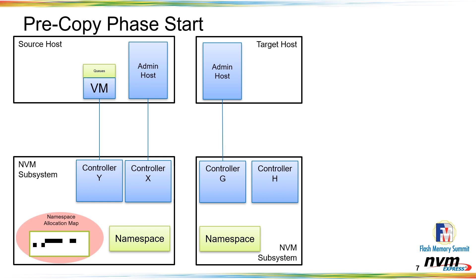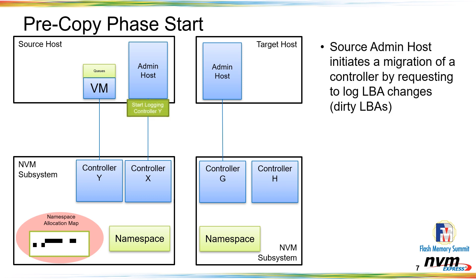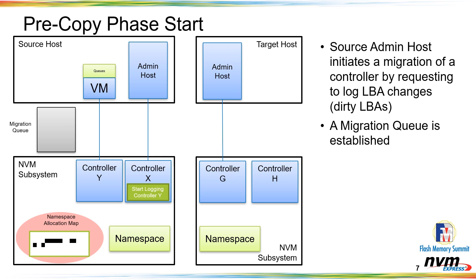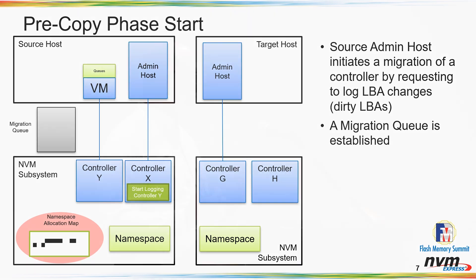The first thing we do is start the whole sequence by issuing a 'start live migration' command. As soon as we start, we have to keep track of all LBAs that are going to be dirty from this point on. From the host's point of view, once we start, it's going to be reading the static view while we keep track of the dirty LBAs. This command creates what we're calling a migration queue — a place to put the logical blocks that have changed during the live migration by the VM being migrated.